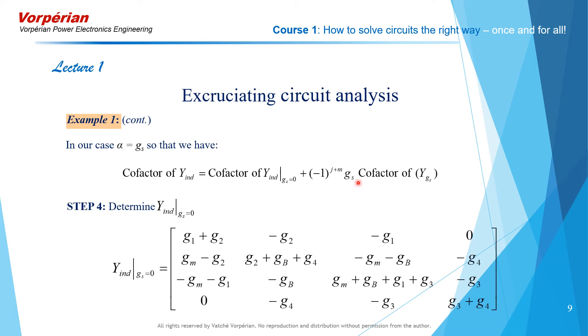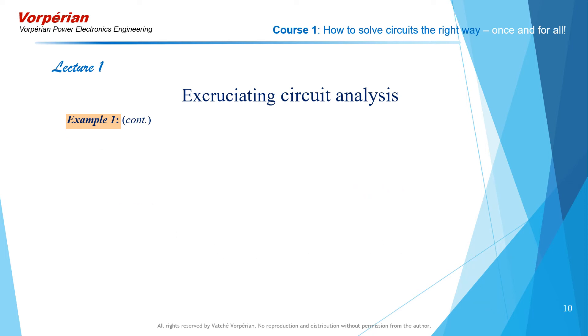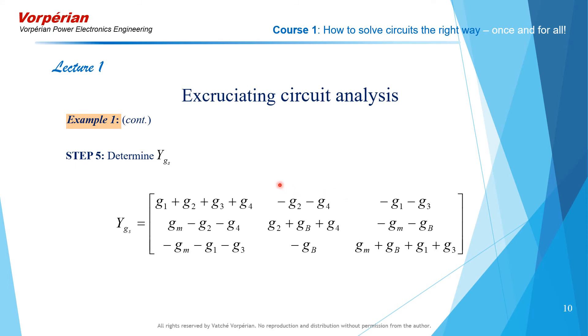We determine next the second term, y_Gs. And here's that term after striking out the proper column and row. Notice it doesn't contain Gs, but it still contains gm.